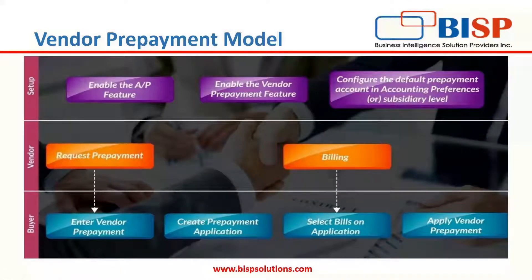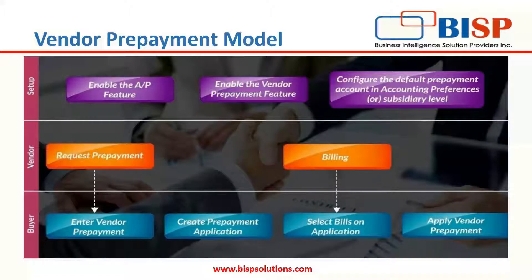For vendor prepayment, first we have to do some setup. Under the setup, we have to enable the accounts payable features, then the vendor prepayment feature should be enabled. After that, a default prepayment account — which is another current asset account — is required to be configured. Then the vendor prepayment is initiated when the vendor who is the supplier of goods and services makes a prepayment request.